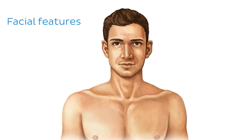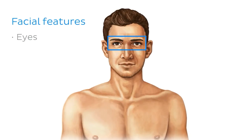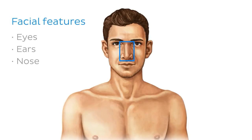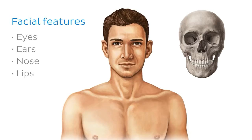The most notable set of landmarks we can see on the head are the facial features — that is, the eyes, the ears, the nose, and the lips. The structure and appearance of the face is heavily influenced by the shape of the skull underneath, so we'll be looking simultaneously at the landmarks as they appear on the underlying skull using this image. No two faces are the same because no two skulls are the same.